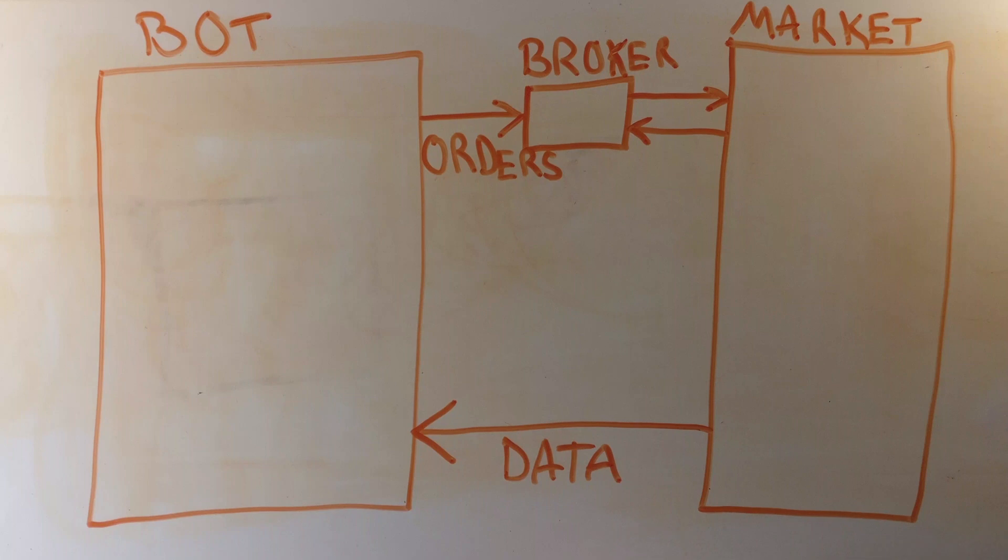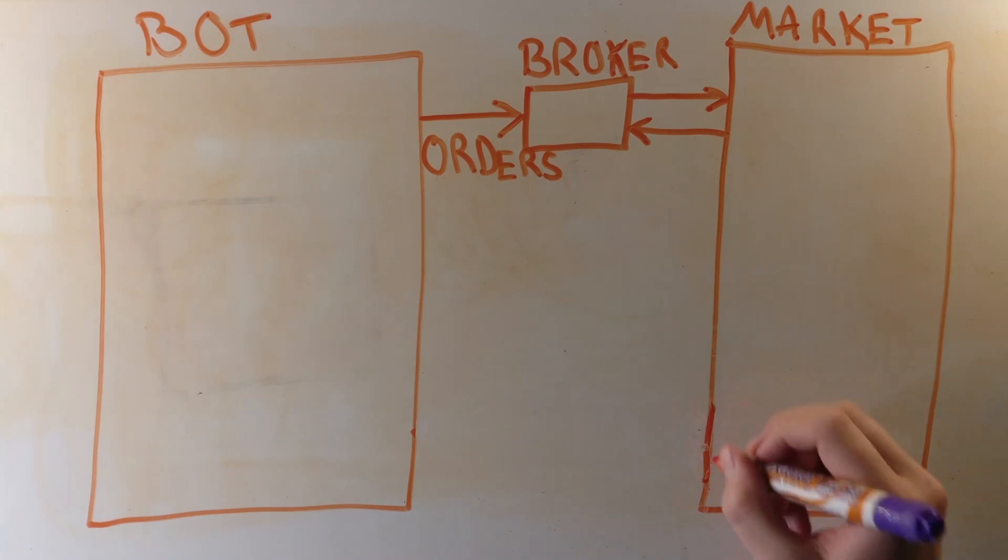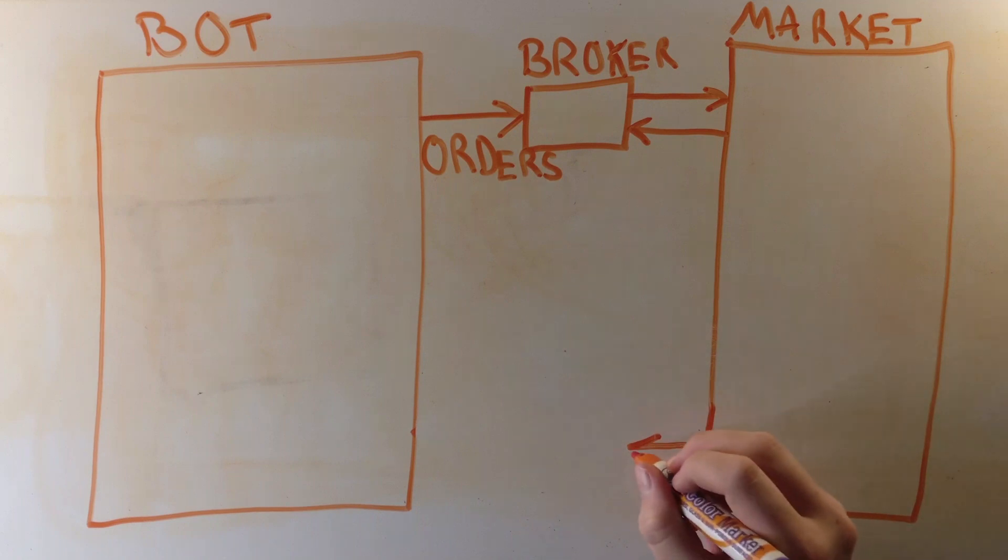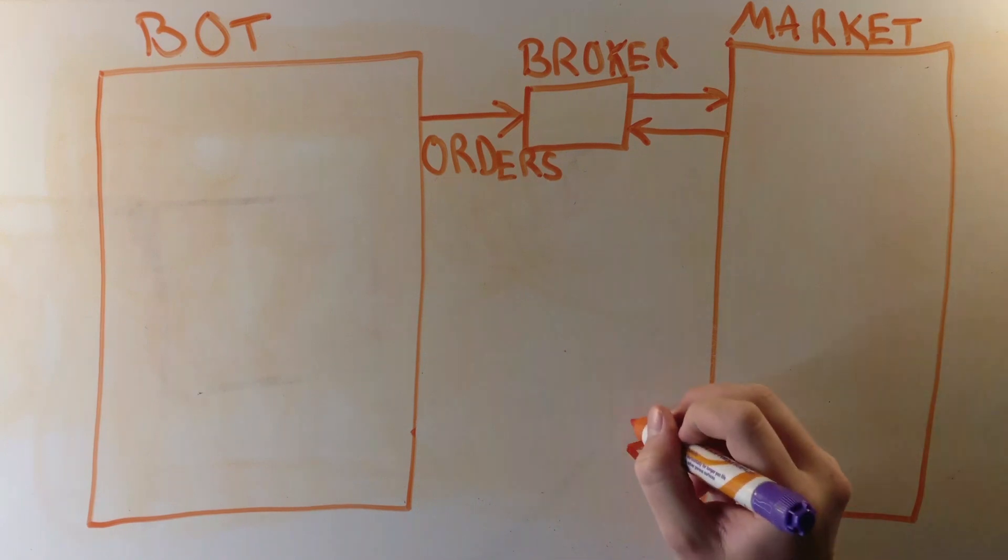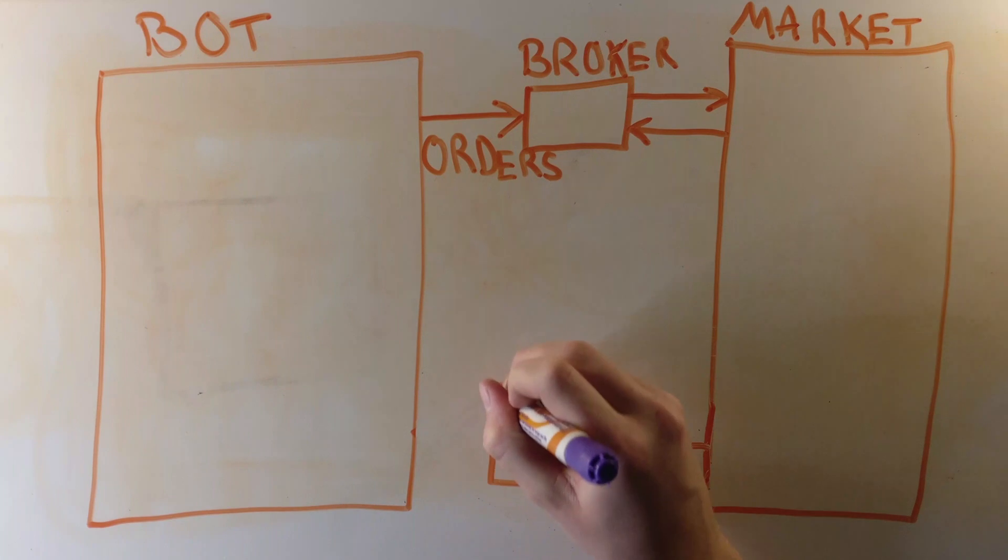There are thousands of listed stocks with thousands of data points each, and therefore it's impractical to collect this data ourselves, especially historical data. This means that we use a data vendor to provide us with historical and real-time data that we know is reliable, accurate, and up to date.